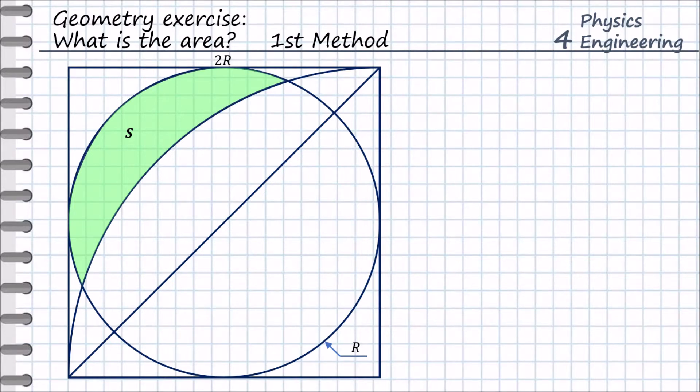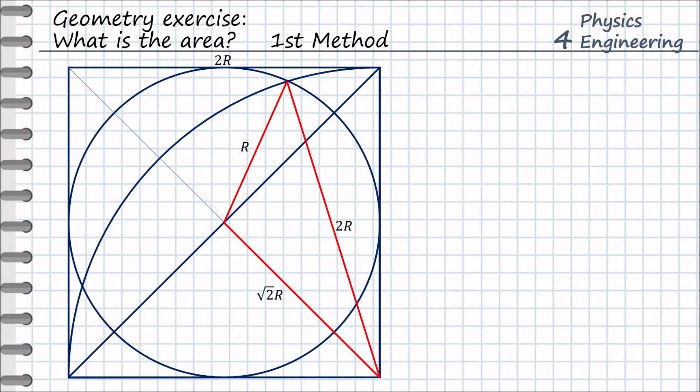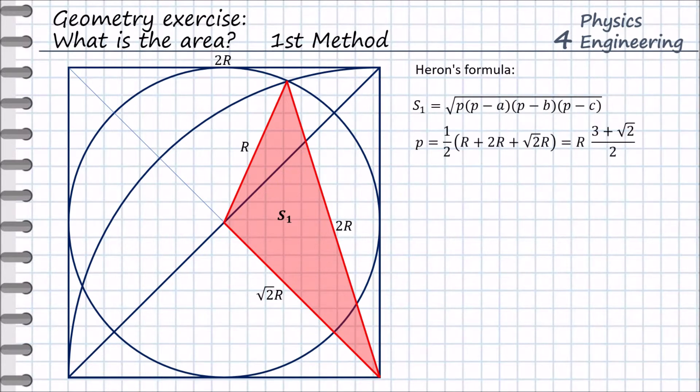The key thing in solving this task is to find this triangle. All the sides of this triangle are given. As a first step we will find the area of this triangle, s1. We use the Heron formula for this. p is the half perimeter, and a, b, c are the sides of this triangle. Therefore the area of this triangle is equal to r squared times square root 7 divided by 4.